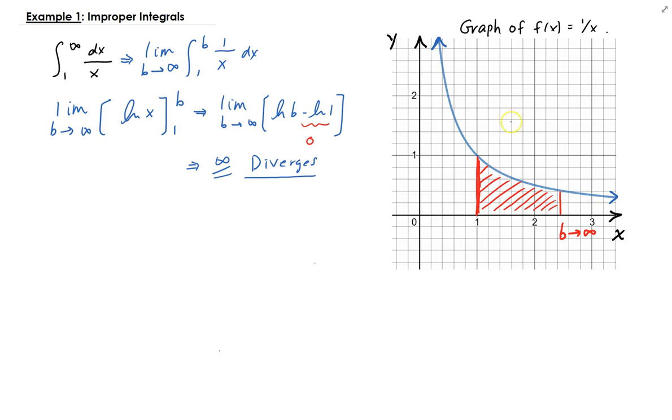So the area is growing. The area is going to infinity as b approaches infinity. So it's diverging.